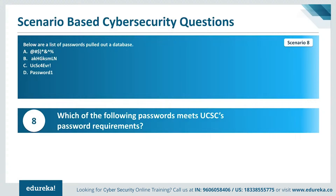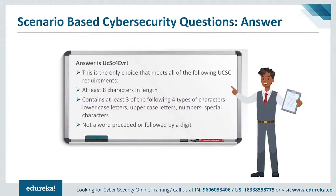Scenario 8: Given a list of passwords from a database, which meets the UCSC password requirement? Option C is the only one that meets all UCSC requirements. It has at least eight characters in length, contains at least three of the four character types — lowercase, uppercase, numbers, and special characters — and is not a word preceded or followed by a digit.